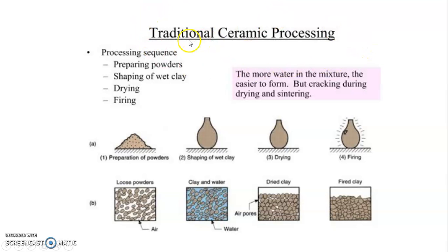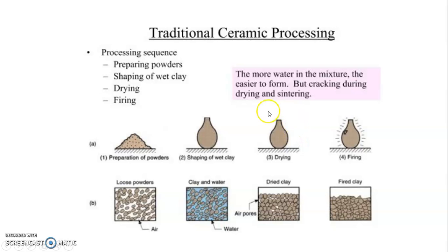The traditional ceramic processing sequence begins with preparing powders, then adding water and shaping the wet clay. After shaping, the piece is set to dry outside. Then the drying process is done, followed by firing. This is the traditional method. The more water in the mixture, the easier it is to shape, but cracking during the drying and sintering process may occur.